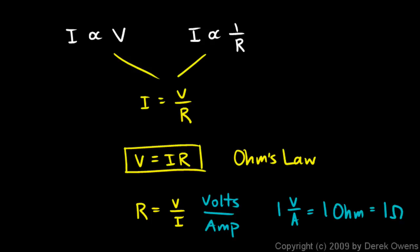And one volt per amp is what we call one ohm. And that's written with the capital Greek letter omega. It looks kind of like this. And that's named, obviously, for George Ohm.